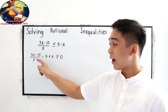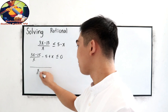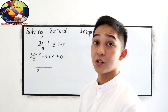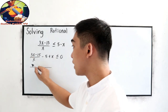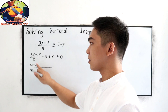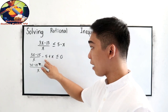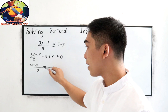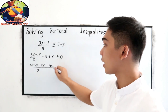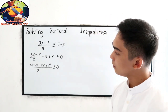Now find the LCD. Our LCD is x, the denominator. So x divided by x equals 1, times 3x minus 15, giving us 3x minus 15. For the next term, x divided by 1 — we have a denominator of 1 — times negative 5, gives negative 5x. And x divided by 1, times x, gives positive x squared. All less than or equal to zero.